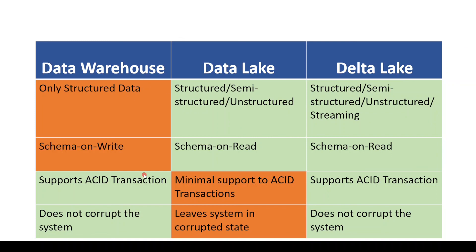Coming to the third comparison point — data warehouse supports ACID transactions, which stands for Atomic, Consistency, Isolated and Durable. At a high level, you can understand this is nothing but DML operations. So data warehouse can support DML operations. But coming to data lake, it provides poor support to ACID transactions. But Delta Lake supports ACID transactions. And the fourth point — if there is any failure or error, data warehouse would not leave the system in corrupted status. But data lake leaves the system in corrupted state. And coming to Delta Lake, similar to data warehouse, it would not leave the system in corrupt status. These are the high-level differences between data warehouse, data lake and Delta Lake.